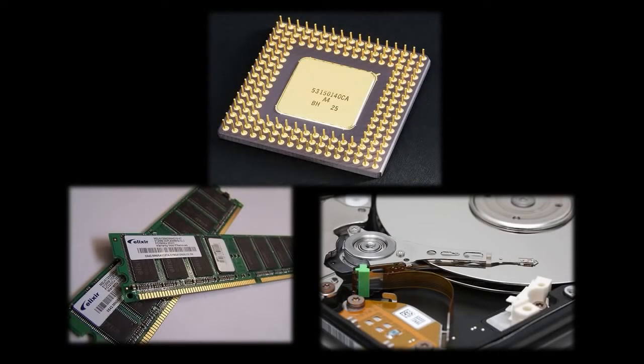The hardware of a computer system can usefully be described as composed of basically three parts. First you have the CPU, the central processing unit. Second, the system memory. And third, what's called I/O, short for Input-Output, which comprises everything else — your hard drive, your display monitor, your keyboard, your mouse — everything other than the CPU and the memory.